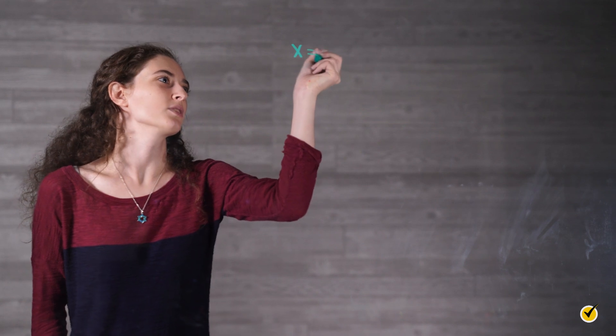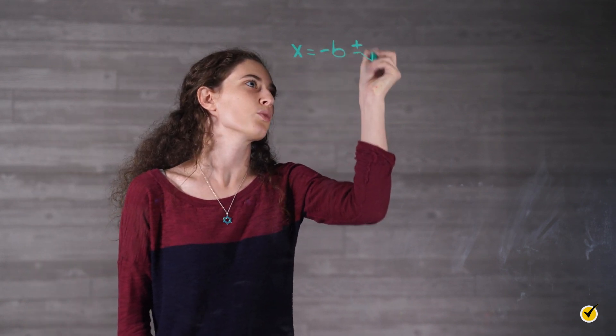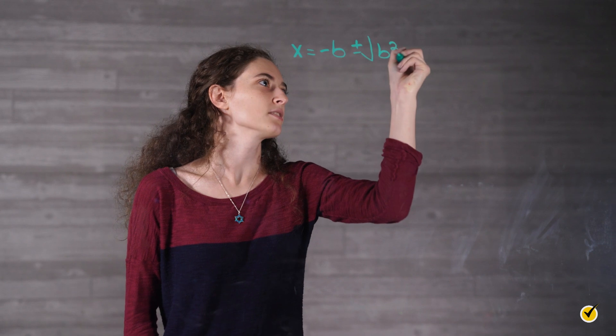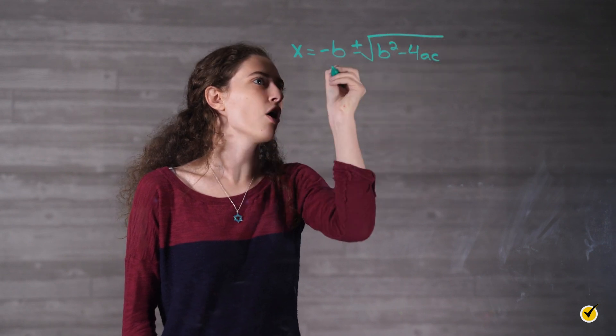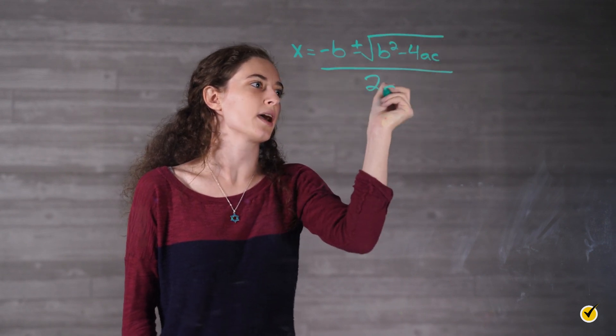The quadratic formula, as you'll see, involves the most algebra, but it has two distinct characteristics. One, it can truly be used with any quadratic equation. And two, part of it can be used to determine how many solutions to expect beforehand. Here it is in all its glory: x is equal to negative b plus or minus the square root of b squared minus 4ac, all over 2a.